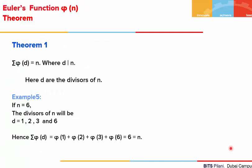There are some very good theorems on phi. The first theorem states that if we take all the divisors of a given integer n, find the phi values, and add them, the summation of phi(d) will always equal n itself. For example, if n = 6, the divisors are 1, 2, 3, 6. Then phi(1) + phi(2) + phi(3) + phi(6) = 1 + 1 + 2 + 2 = 6, which equals n.